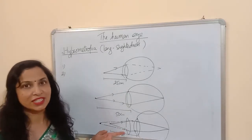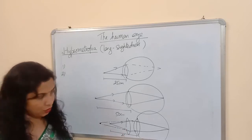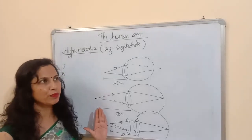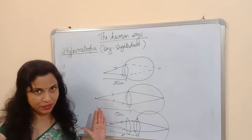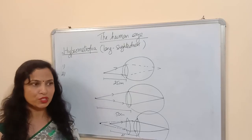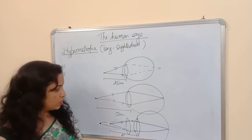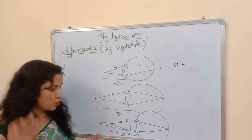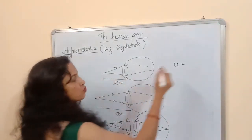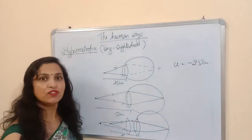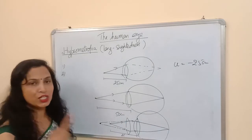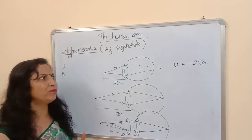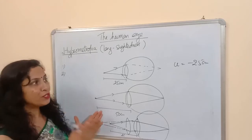In hypermetropia we use a convex lens of proper focal length. For the numerical: in hypermetropia, the near point should be given in the question, or we take it as 35 cm. The object distance u is the least distance of distinct vision, which is 25 cm. Since u is always negative, u = −25 cm. So in hypermetropia, u = −25 cm, whereas in myopia we took u as minus infinity.